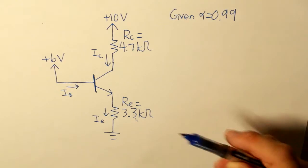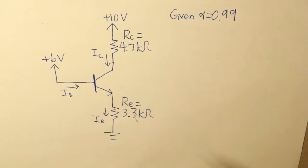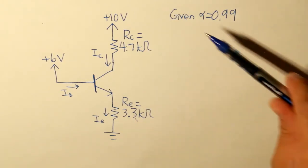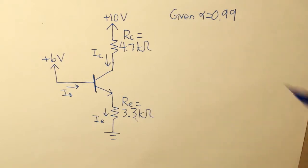So in this example, something's different. Our base voltage is higher now, 6V. Now given that our resistor values are the same, and our common emitter current gain is the same as well, let's find out if this BJT is in active mode or not.